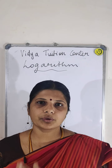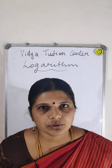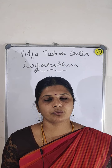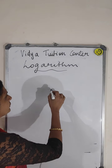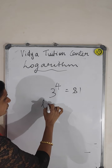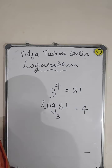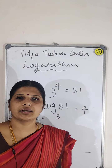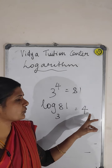Now, 3 to the power of 4 is equal to 81 — you know this number. 3 to the power of 4 means 3 into 3 into 3 into 3 is equal to 81. This is exponential form, which we have studied in lower classes. I am going to write this in the form of logarithmic form. So log 81 to the base 3 is equal to 4.